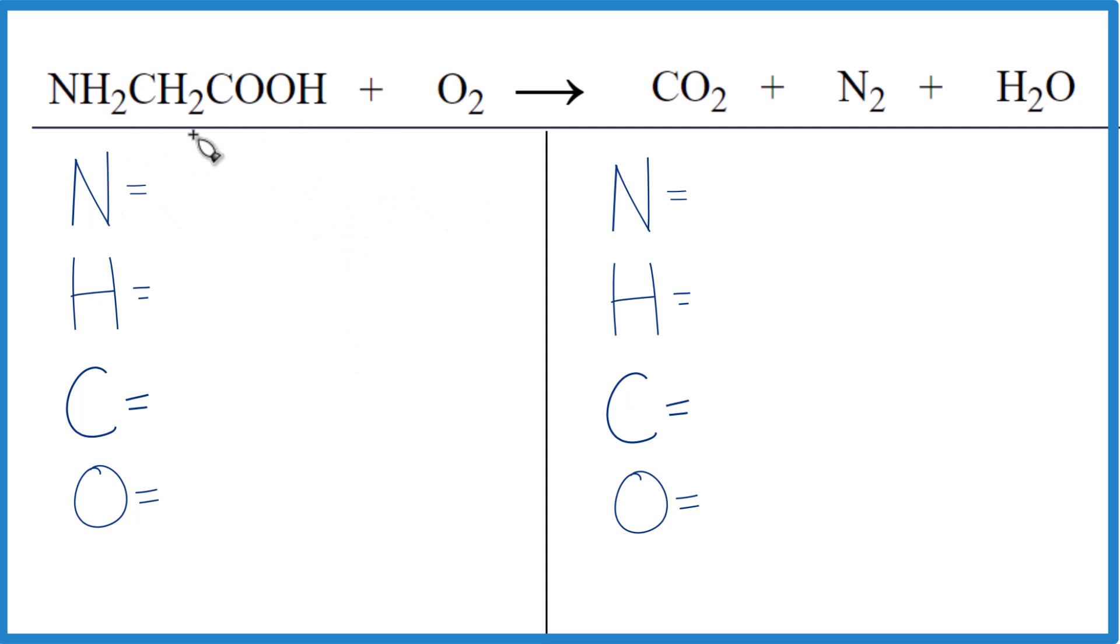We have glycine, the simplest amino acid, NH2CH2COOH plus O2. So we're adding oxygen gas here. This is combustion. We have carbon dioxide and water, and we do get some nitrogen.